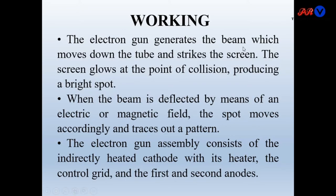The electron gun generates the beam which moves down the tube and strikes the screen. The screen glows at the point of collision producing a bright spot. This electron gun generates the beam which is moved up and down by the plates and produces a bright spot on the screen. When the beam is deflected by means of an electric or magnetic field, the spot moves accordingly and traces out a pattern. This spot at the center can be moved by the electric and magnetic field produced by the deflecting plates.